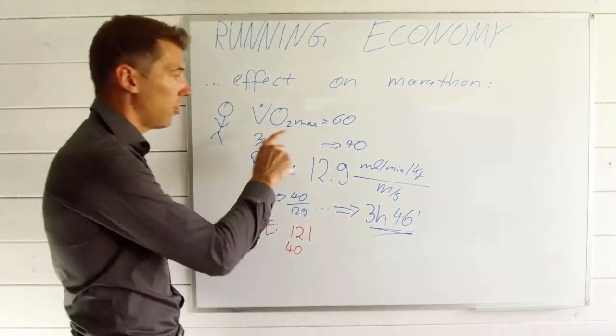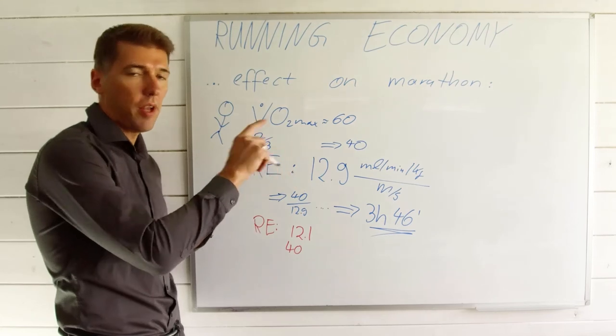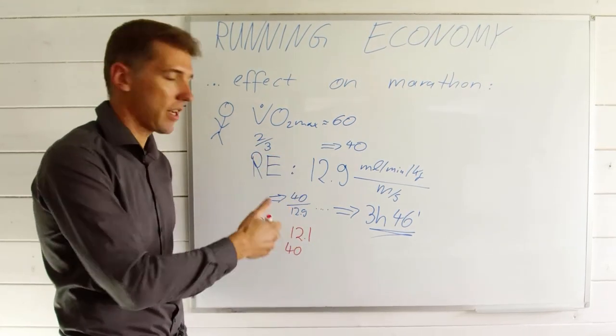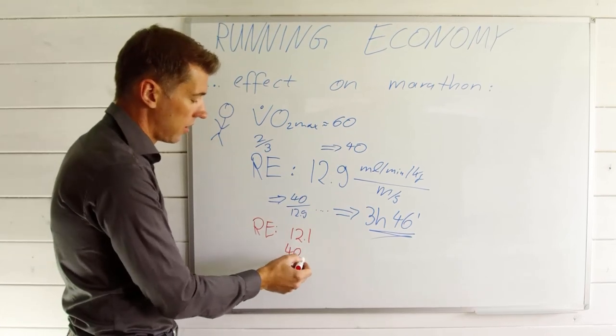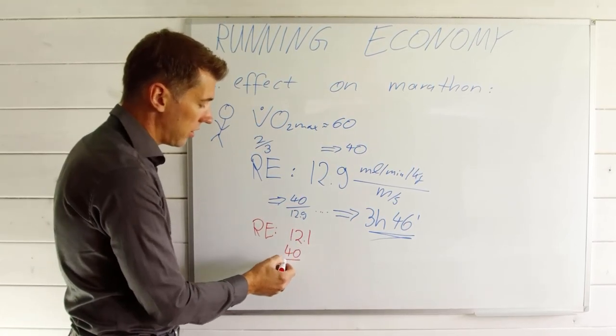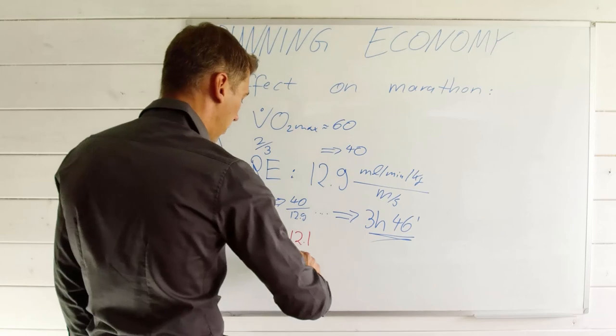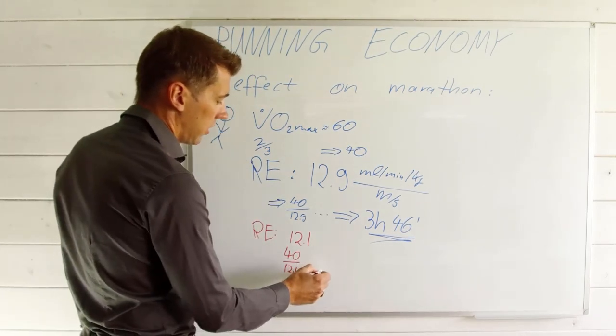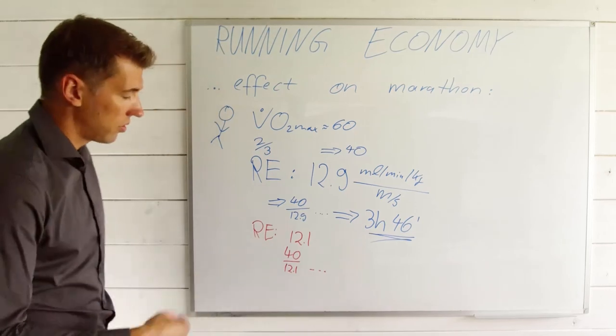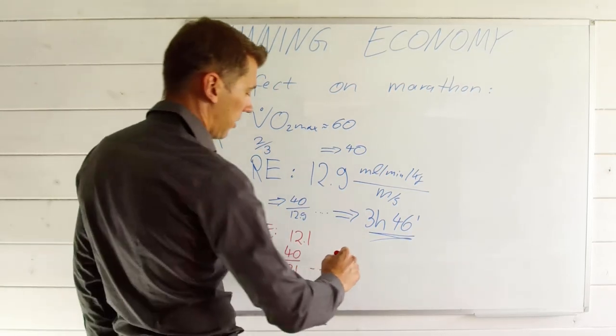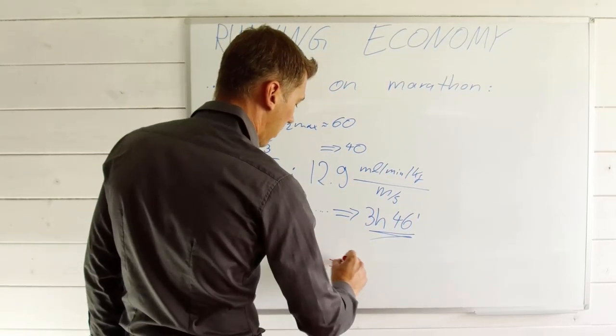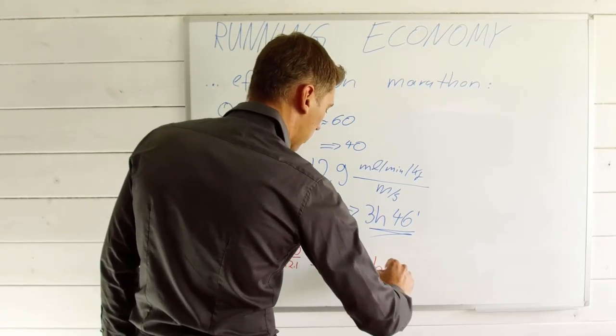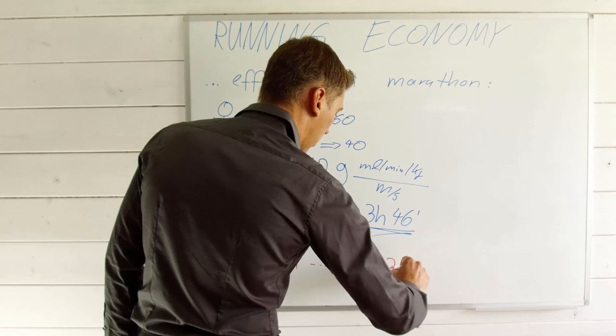Nothing changes in the physiology. Fat max stays the same, carbohydrate combustion, VO2, VLAmax, everything stays the same. Now we are looking at 40 milliliters divided by those 12.1, and now this ends up 3.3 something meters per second. Basically you end up at a marathon time of 3 hours and 31 minutes.